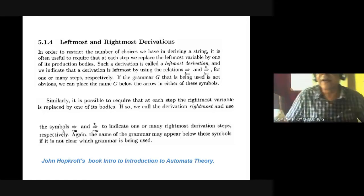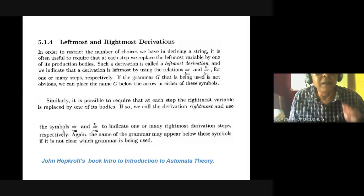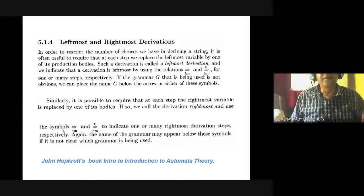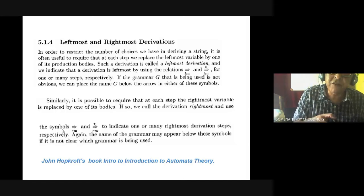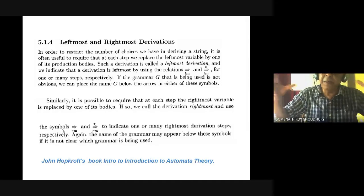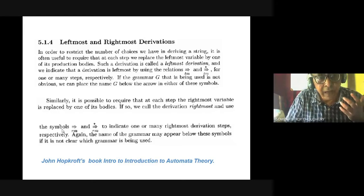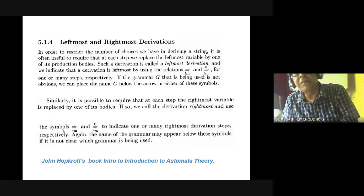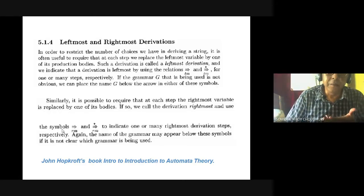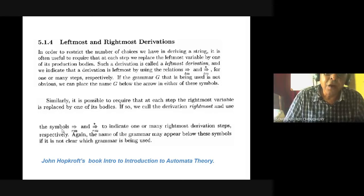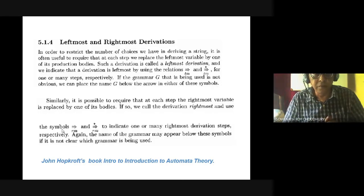For any sentence consisting of terminals, your leftmost derivation gives one and only one parse tree for an unambiguous grammar. And rightmost derivation also gives one tree — ultimately both trees are the same. So for an unambiguous grammar, any sentence will have one and only one parse tree from leftmost derivation, and one and only one parse tree from rightmost derivation.